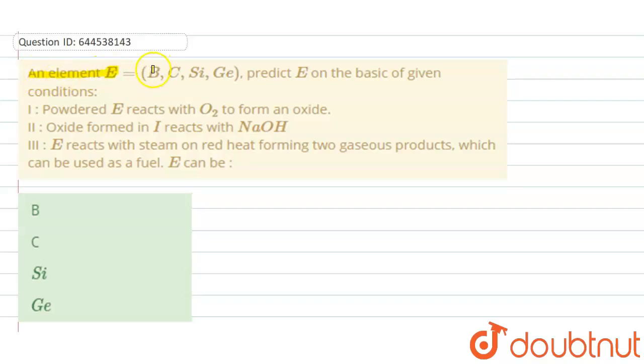An element E - and E element can be boron, carbon, silicon, and germanium - predict E on the basis of given conditions. So the first condition given is powdered E reacts with O2 to form an oxide.